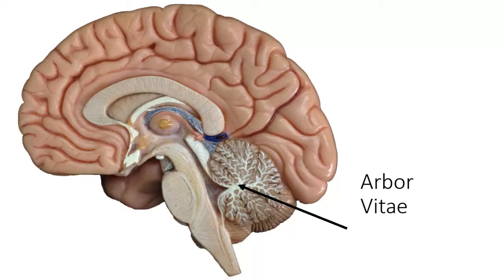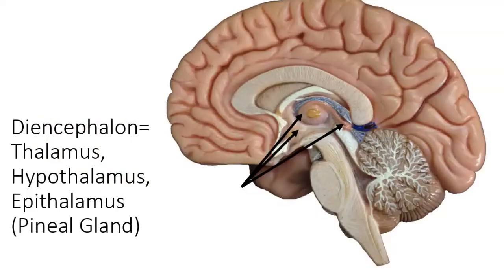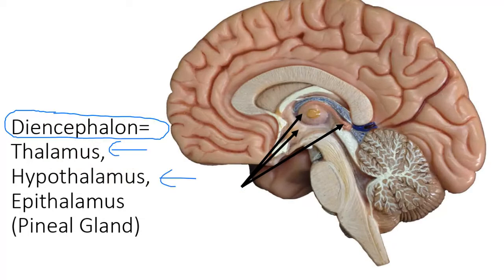That's it for the cerebellum. Now we're going to move on to the third region of our brain — the diencephalon. There are three parts to the diencephalon. You want to know that the diencephalon is made up of the thalamus, the hypothalamus, and the epithalamus. The epithalamus has two parts: the habenular nucleus, which we'll learn about in lecture, and the pineal gland.